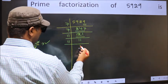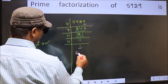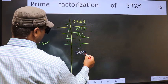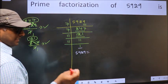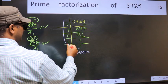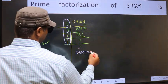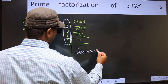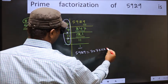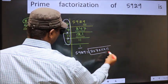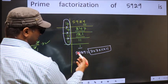So we got 1 here. So the prime factorization of 5929 is the product of these numbers. That is 7 into 7 into 11 into 11. This is the prime factorization of 5929.